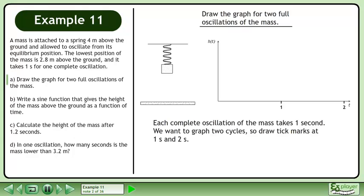Each complete oscillation of the mass takes 1 second. We want to graph two cycles, so draw tick marks at 1 second and 2 seconds.